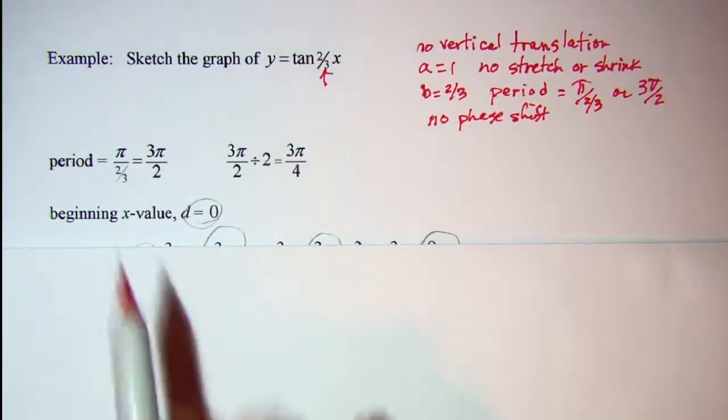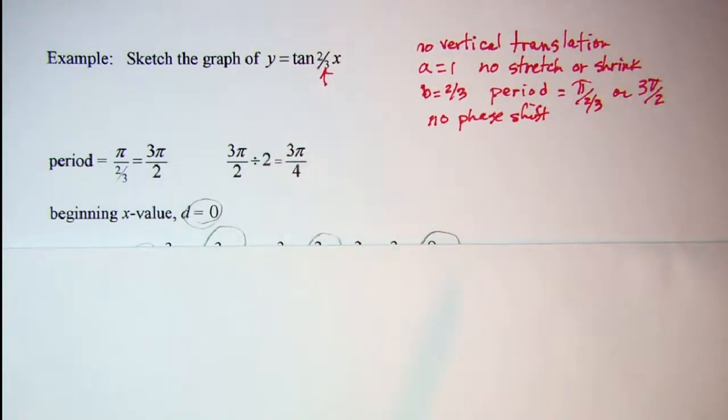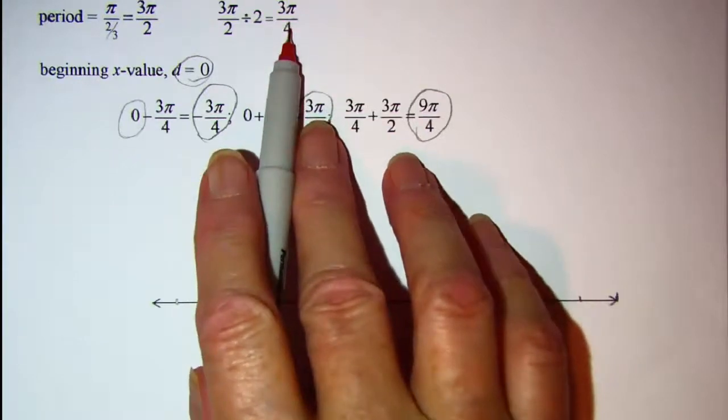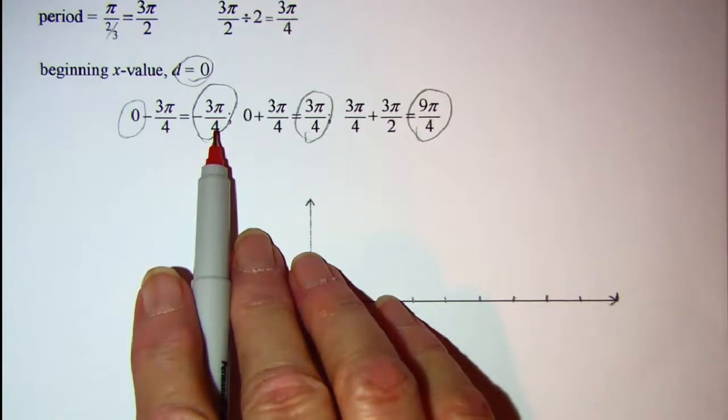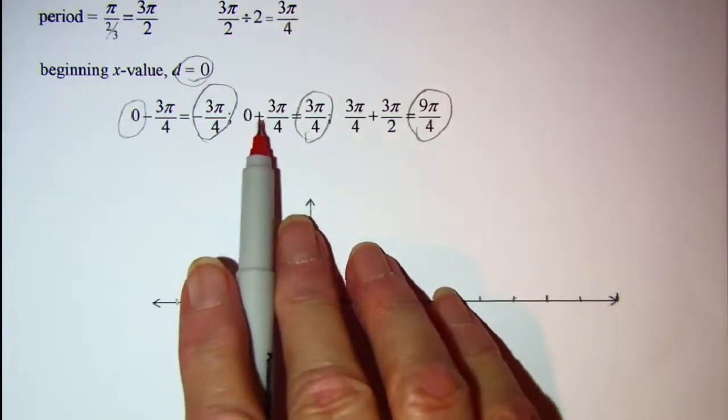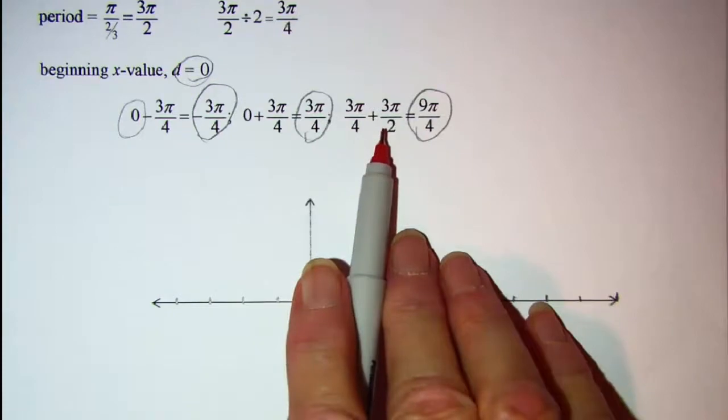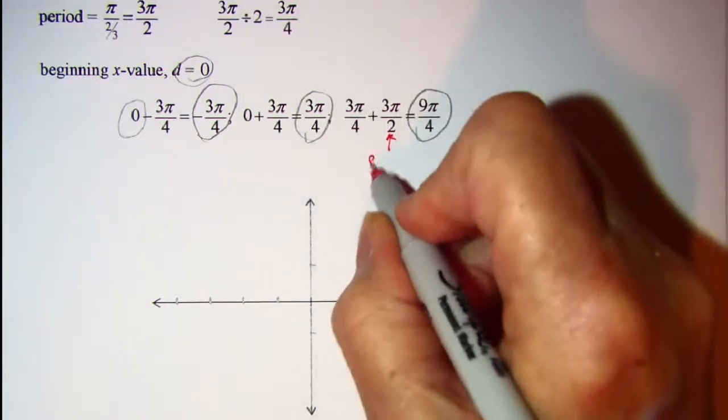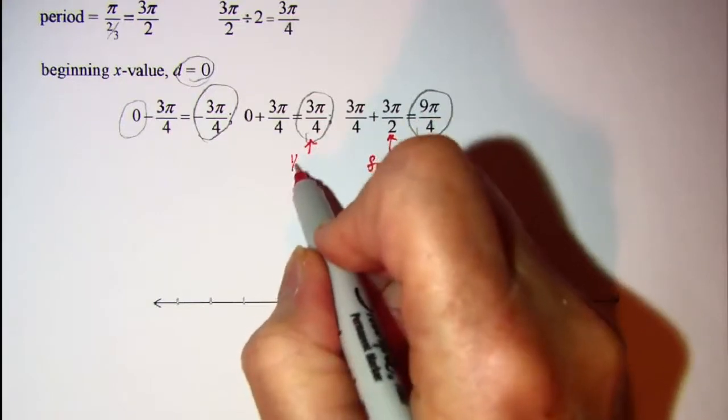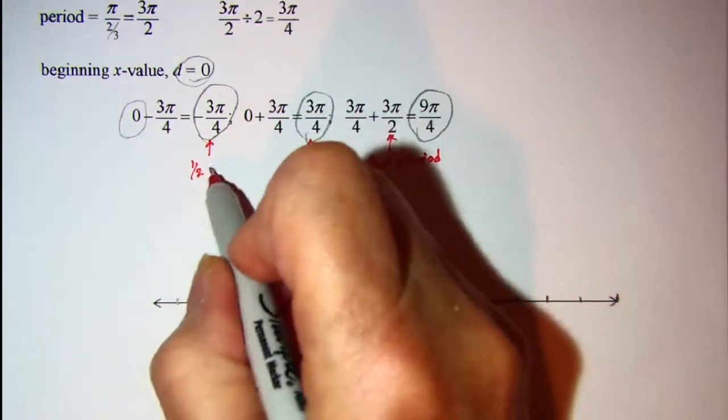Our beginning x value is D and since that was not there, that means D is zero. So we take our beginning x value and we subtract this half of the period to find where our first asymptote guideline will be. And then we also add that half a period to the beginning x value to get another vertical asymptote, and then onto this x value we add an entire period. So remember this is a full period. And this was a half period. You only do the half periods right around the beginning x value.